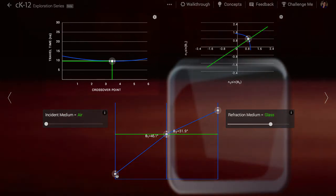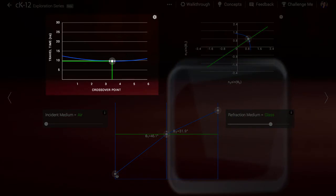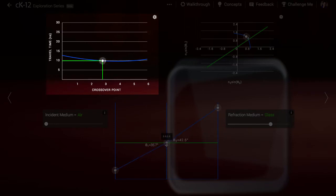The graph at top left is a plot of that amount of time in nanoseconds that light takes to make the whole journey. If we change the point on the interface where the light changes directions, we see that the total amount of time changes. The plot is a curve, and the curve has a minimum or least value.